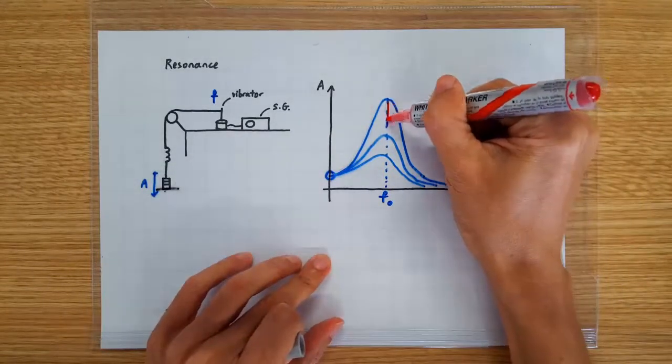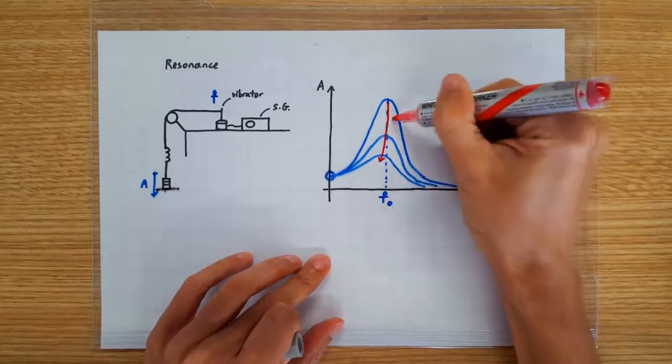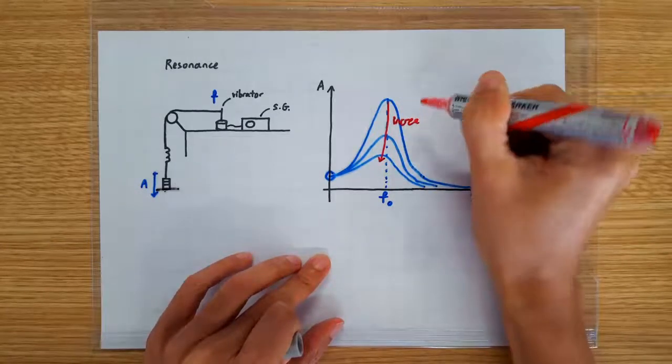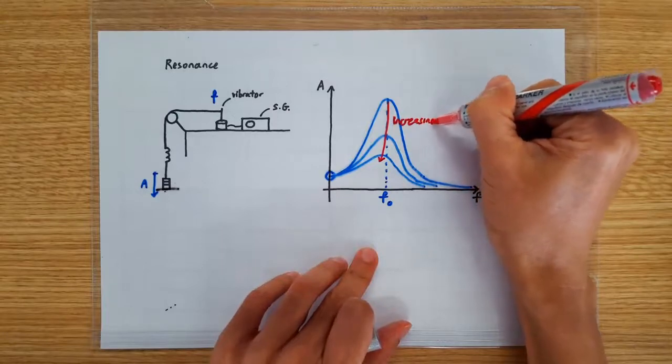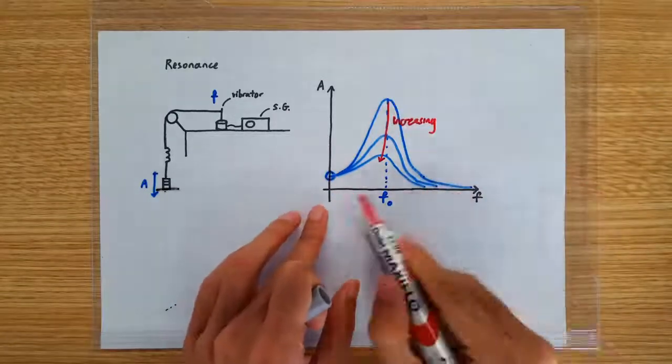So when you increase the amount of damping, the amplitude of forced oscillation is going to become lower at every driving frequency.